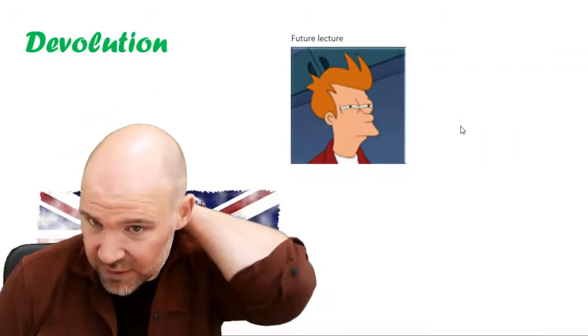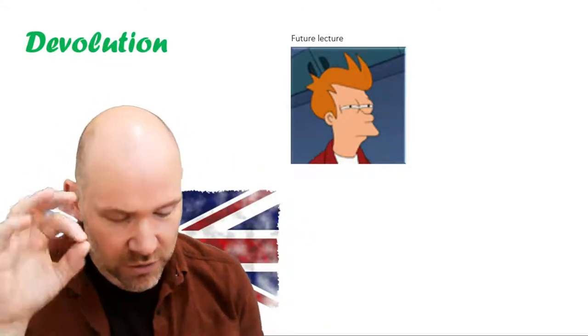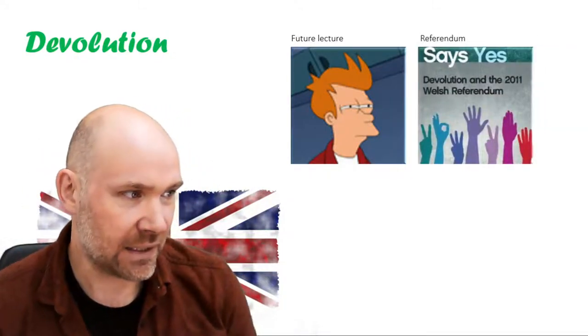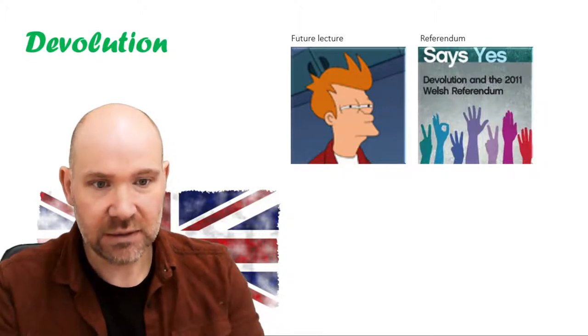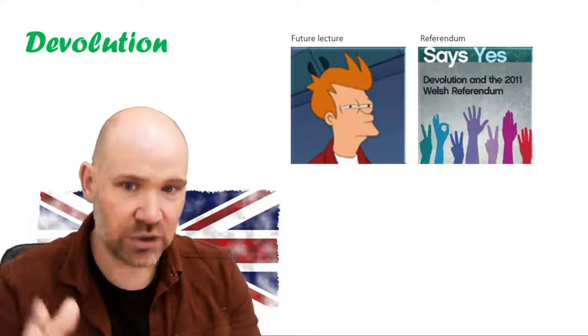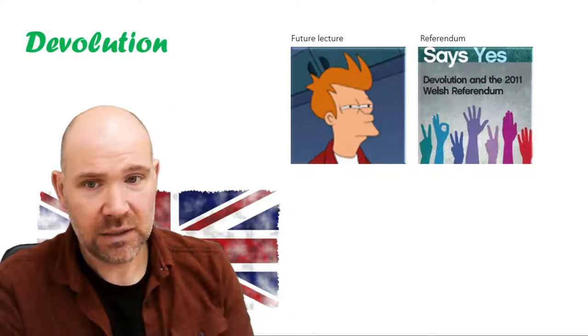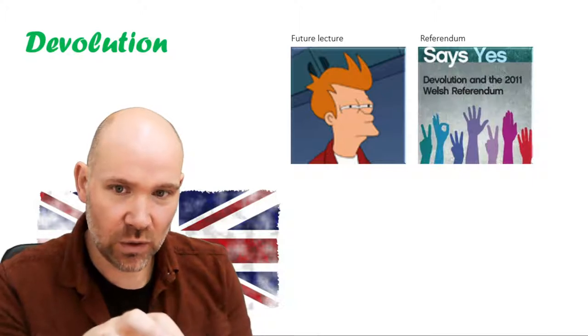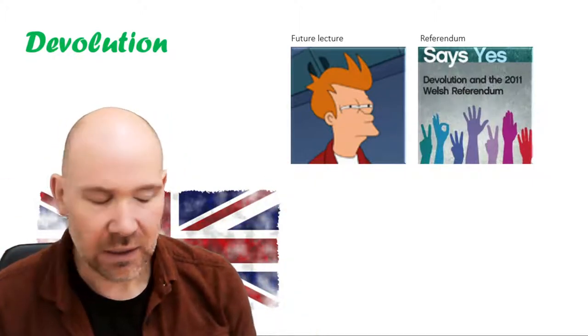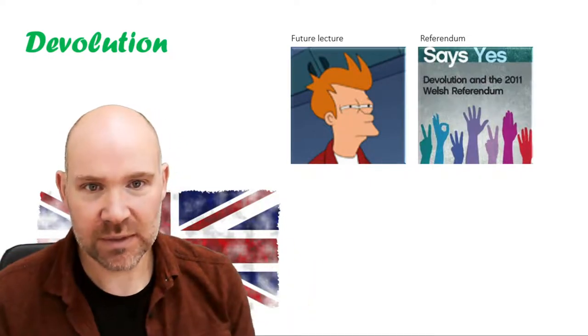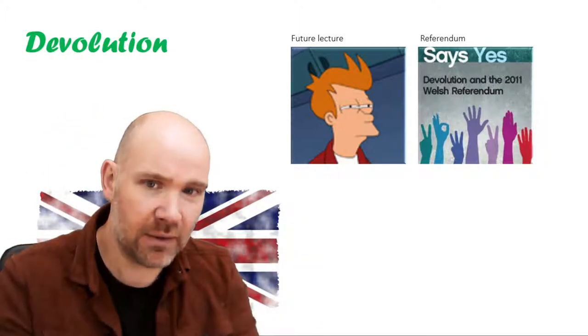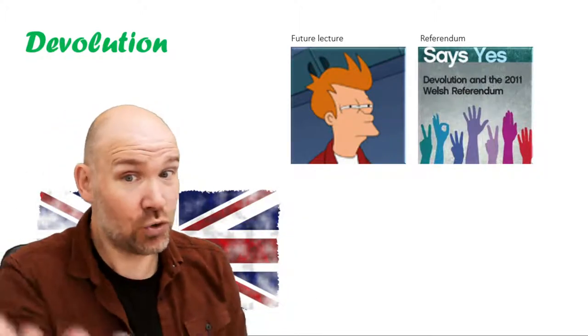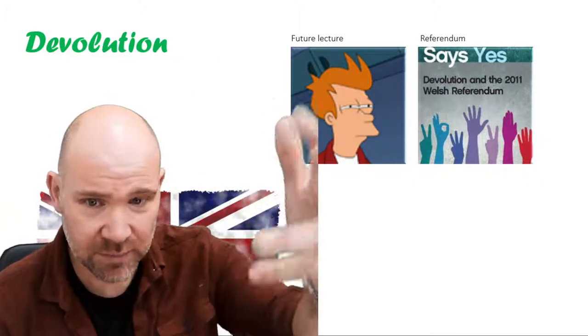One of the biggest changes that New Labour brought was what's called devolution — and this is such a big topic that it will get its own lecture. The broad idea was that Blair's government wanted to create regional parliaments: the Scottish Parliament, the Welsh Parliament, the Northern Irish Assembly. They wanted people to feel that the regions were not just being governed by England. And they used a referendum to do this — they went to the people of Scotland and asked: do you want your own parliament? Scotland voted yes by quite a large majority.